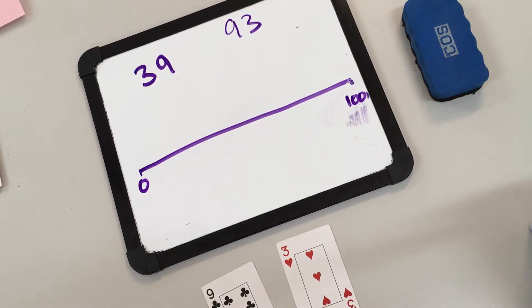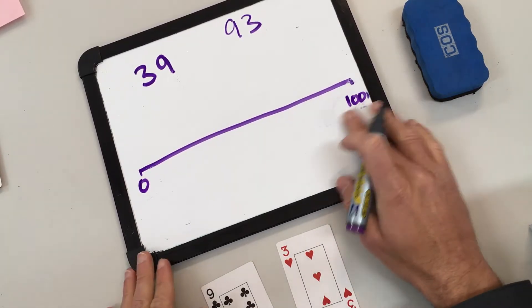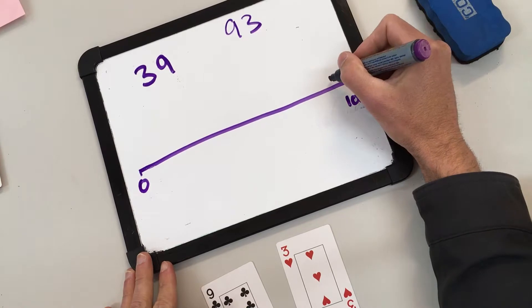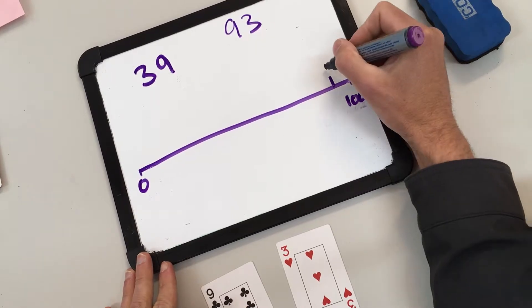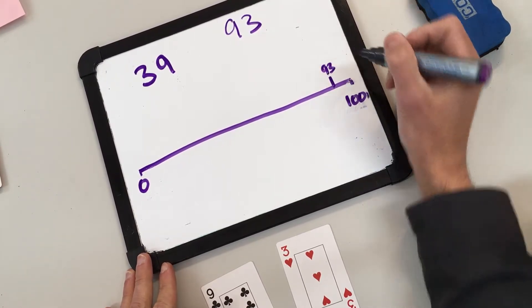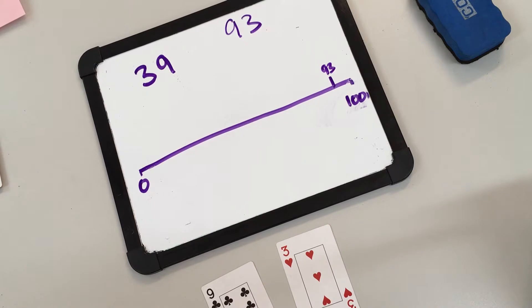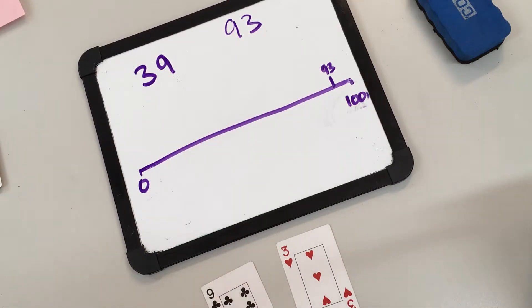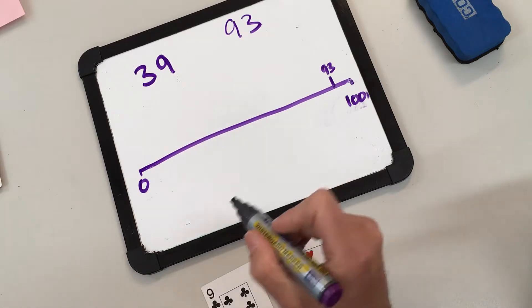Now I have to try and work out where 39 and 93 would go on my blank number line. I'm going to say that 93 will go around here, because 93 is only seven away from 100. 39 is a bit tricky — I know that 39 is very close to 40, and I know that 40 is less than 50.